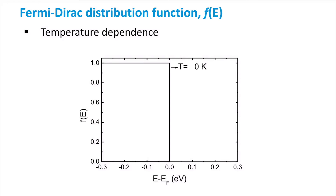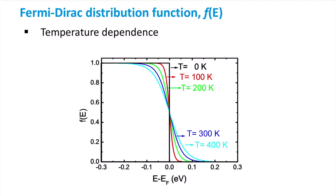At zero Kelvin, the Fermi-Dirac distribution function is a step function, meaning only the energy levels below the Fermi level are occupied. Energy states of the conduction band that are above the Fermi level are empty — no electrons occupy these states. However, if the temperature goes up, the probability of occupation of higher energy levels increases. The more the temperature rises, the higher the probability of occupation, and more electrons can fill these higher states. This is the result of thermal excitation — the excited electrons are getting energy from the ambient heat. If the temperature is higher than zero Kelvin, electrons can occupy energy levels above the conduction band edge.